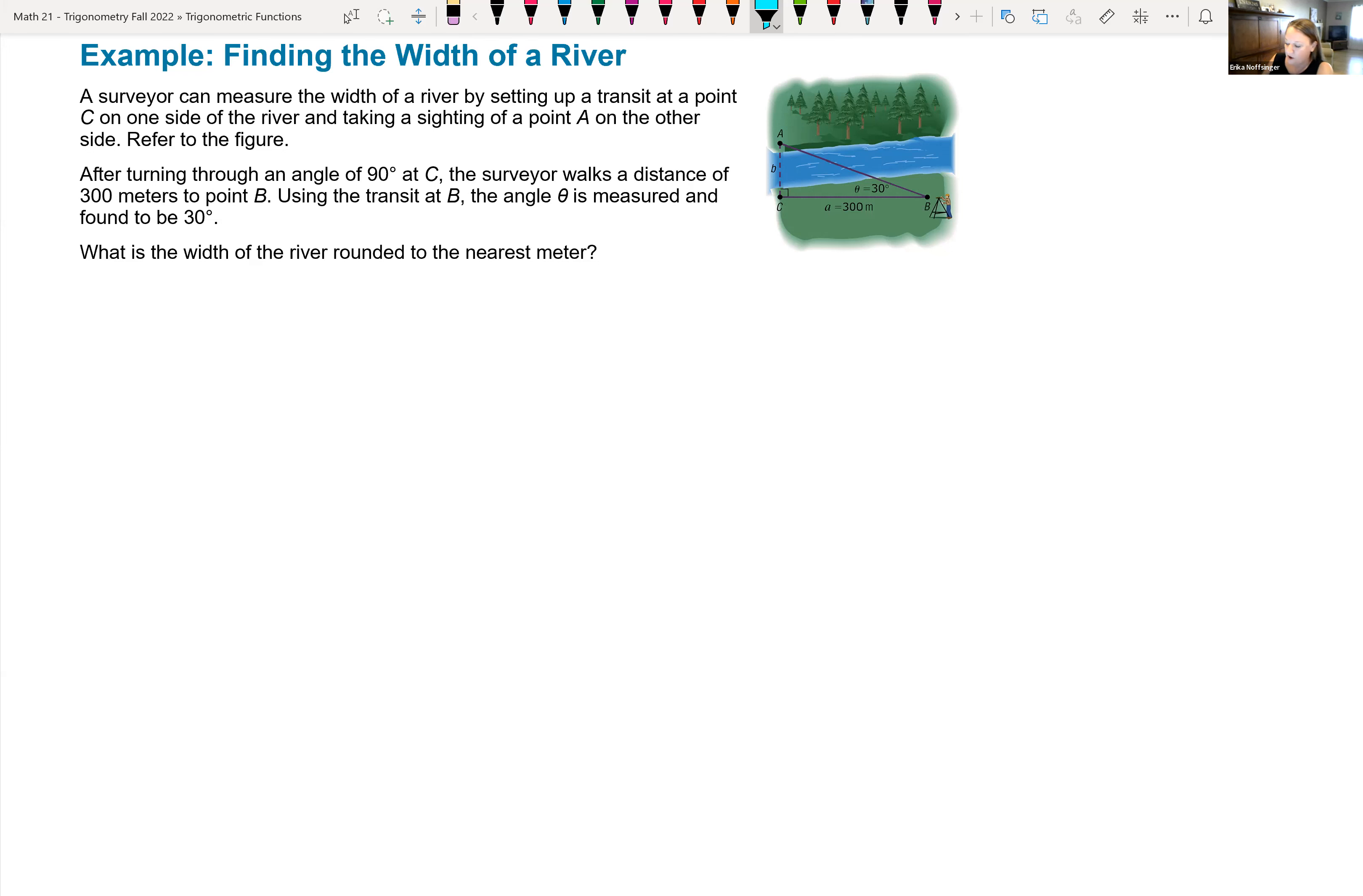So, looking at the following, we're trying to find the width of the river. We have a surveyor and they can measure the width of the river by setting up the transit at a point, and that's called point C, on one side of the river and taking a sighting of a point A on the other side.